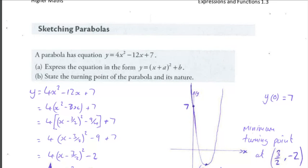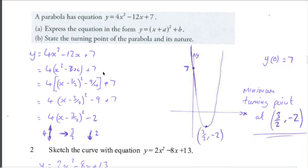minus 12x plus 7. Express the equation in the form y equals a bracket x plus b all squared plus c, because we're going to have a coefficient. This coefficient of x squared is going to come into it. Part b: state the turning point of the parabola and its nature.